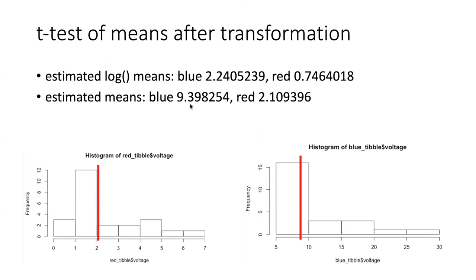So by doing the back transformation we end up with estimated mean values that make sense in terms of the units that we did the experiment in.